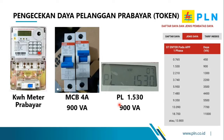Untuk mengetahui daya pelanggan di KWH meter prabayar atau KWH meter token, sama seperti halnya pada pelanggan pasca bayar — kita dapat memperhatikan MCB yang terpasang. Contohnya, jika terpasang MCB 4 ampere, berarti daya kontrak pelanggan tersebut adalah 900 VA. Namun ada informasi khusus: kita bisa melakukan pengecekan daya pada KWH meter prabayar walaupun MCB tidak terpasang, yaitu dengan cara menekan kode 07 enter pada KWH meter prabayar tersebut.